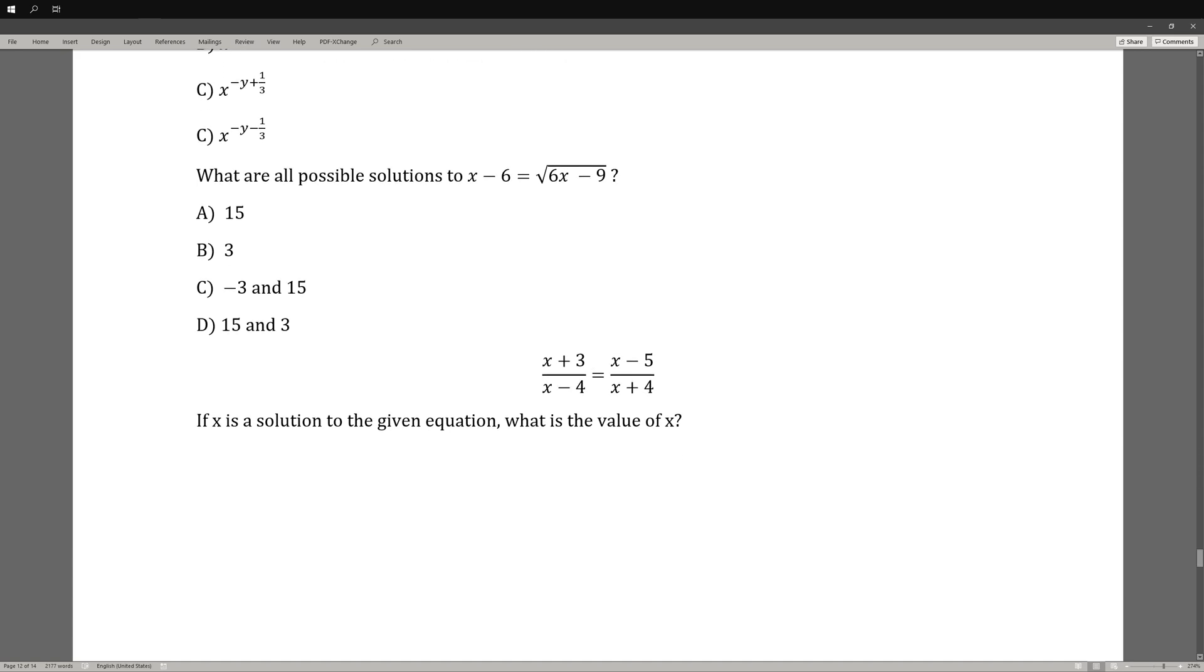What are all the possible solutions to x minus 6 equals square root of 6x minus 9? The first thing we need to do is eliminate the square root. So we square this side and this side also. Then we get (x - 6)^2 = 6x - 9. And now we have x^2 - 12x + 36 = 6x - 9. Then we subtract it over, set it equal to 0. x^2 - 18x + 45 = 0. And so we get 15 and 3 as roots. However, we need to check for extra solutions because we have a square root.